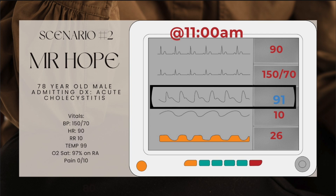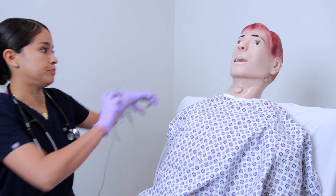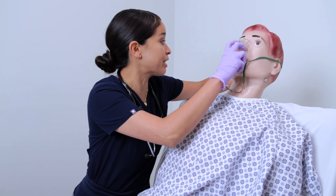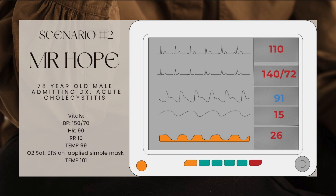At 11am I reassess Mr. Hope. He is showing signs of respiratory distress and increased work of breathing. I notice his oxygen saturation has dropped from 97% to 91% while on room air. I immediately apply a simple mask at 15 liters per minute and gather vitals: blood pressure 140 over 72, heart rate 110, respiratory rate 15, temperature 101. He's running a fever and his saturation is 91%. I then listen to Mr. Hope's lungs.